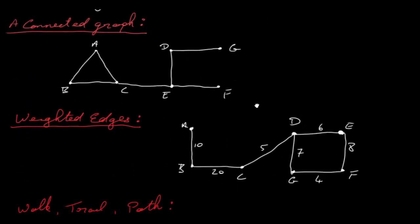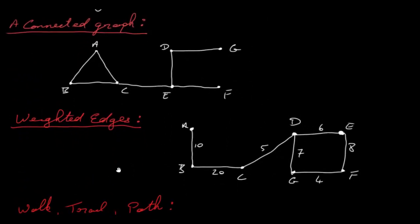Next we have connected graphs. In a connected graph there is a path between any pair of nodes or vertices. A disconnected graph is the opposite, where there's a gap and the graph is effectively disconnected. For example, if I took away the edge between D and G and another edge, you'd end up with three components of the original graph — this one here, this one here, and G on its own. So there isn't a path between B and G, or between any of these vertices and G, or indeed D, E and F.